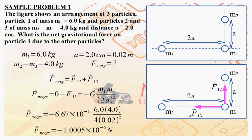So r in this case is 2a, and r squared is the square of 2a. F_net_g_x equals negative G times m1 times m3 over (2a) squared. We know all these quantities: G is a constant, m1 is 6 kilograms, m3 is 4 kilograms, and a is 0.02 meters. We calculate F_net_g_x to be negative 1.0005 times 10 to the negative 6 newtons.